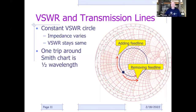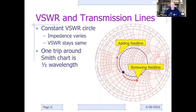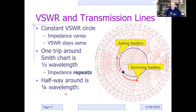One complete trip around the constant SWR circle equals a half wavelength of transmission line. If the line is exactly a half wavelength long, the impedance looking in equals the antenna feed-point impedance. If it's not a half wavelength, the impedance looking in differs from the feed-point impedance—though the SWR will be the same. Every half wavelength, the impedance repeats.